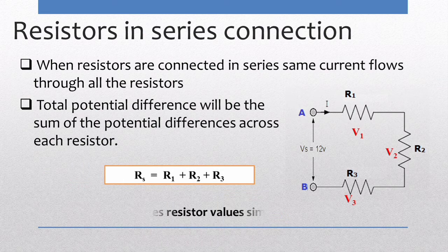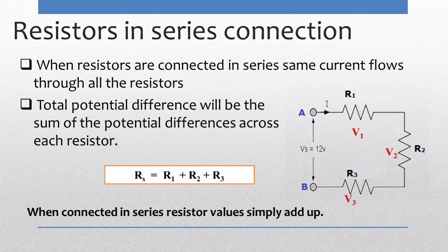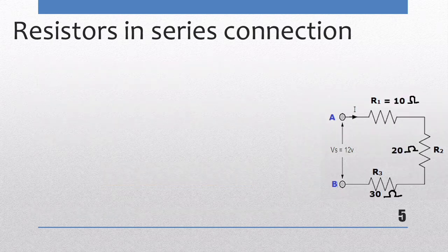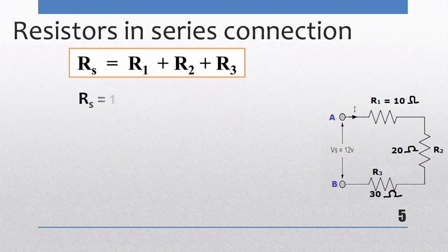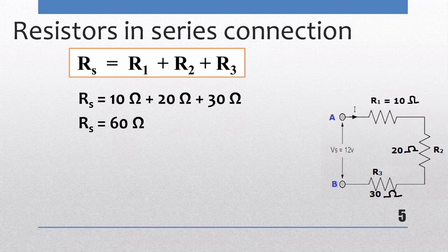In a series combination of resistors, the equivalent resistance equals the sum of the individual resistances. For example, three resistors of 10 Ω, 20 Ω, and 30 Ω connected in series give an equivalent resistance of 60 Ω.